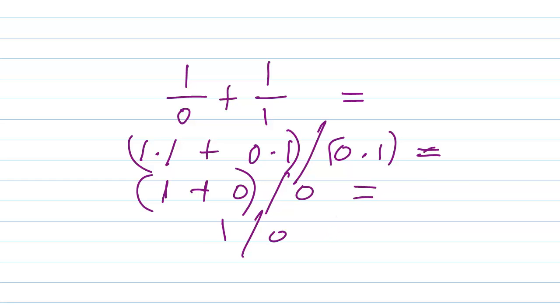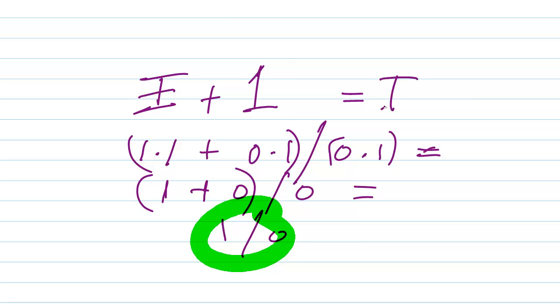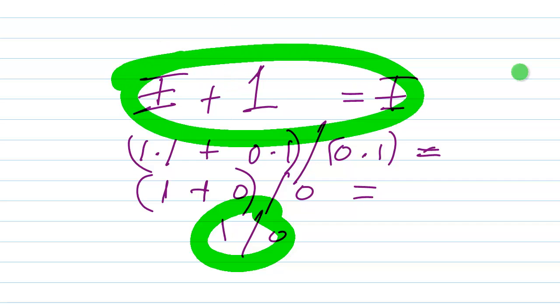So this, it works for this particular iteration or concept or notion of what we would expect infinity to behave like. If you add 1 to this quantity here, this Yagi, if you add 1 to that, then you get Yagi all over again. So that works.